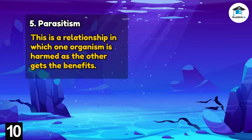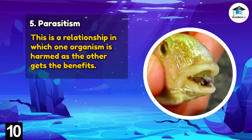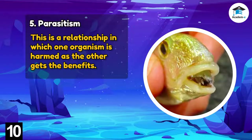Parasitism is a relationship in which one organism is harmed as the other gets the benefits. An example is roundworms on fish — roundworms absorb nutrients from the intestines of fish, taking the fish's food for themselves. Because the worm benefits and the fish suffers, it is an example of parasitism.